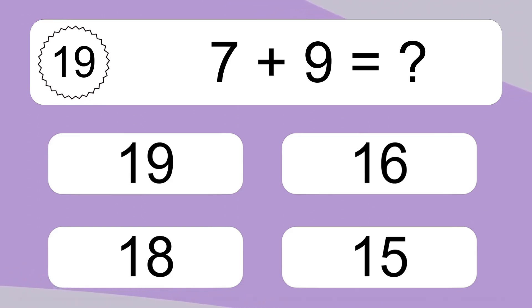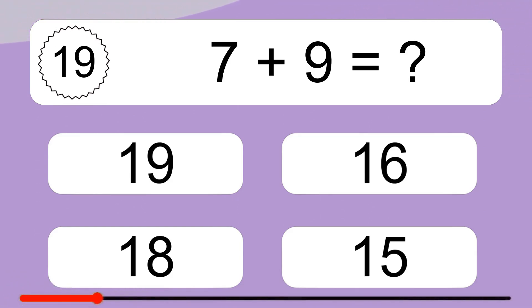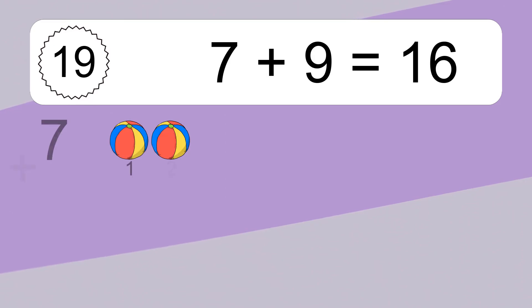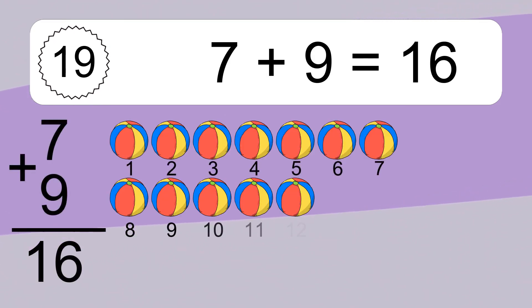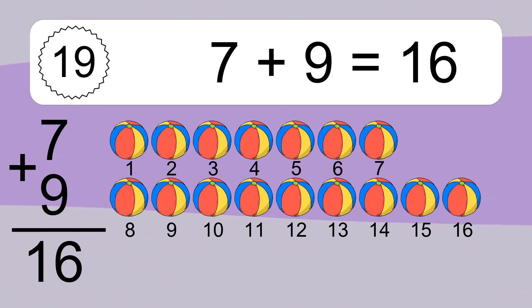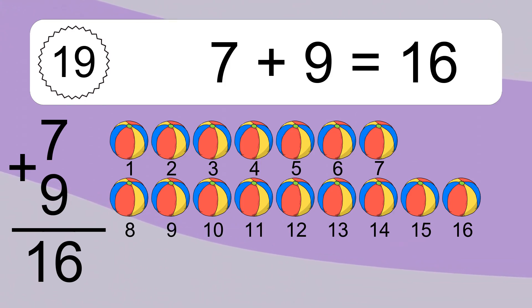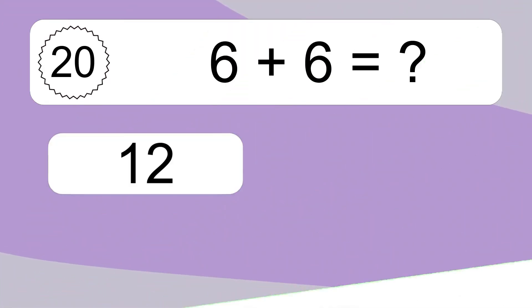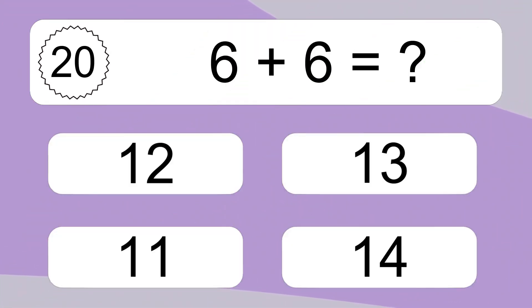7 plus 9 equals what? Let's count it: 5, 6, 7, 8, 9, 10, 11, 12, 13, 14, 15, 16.